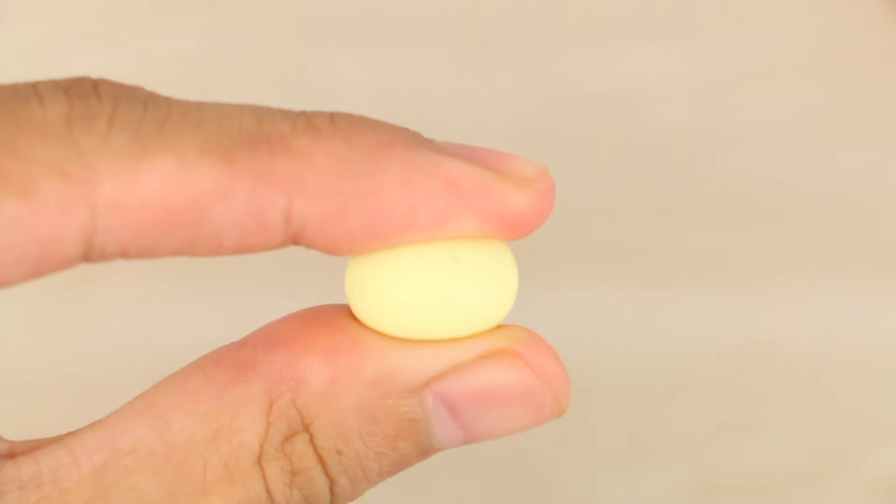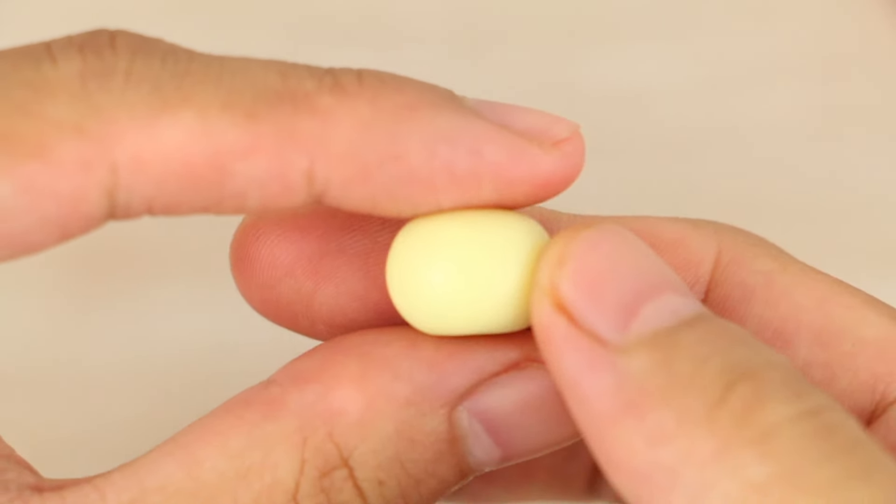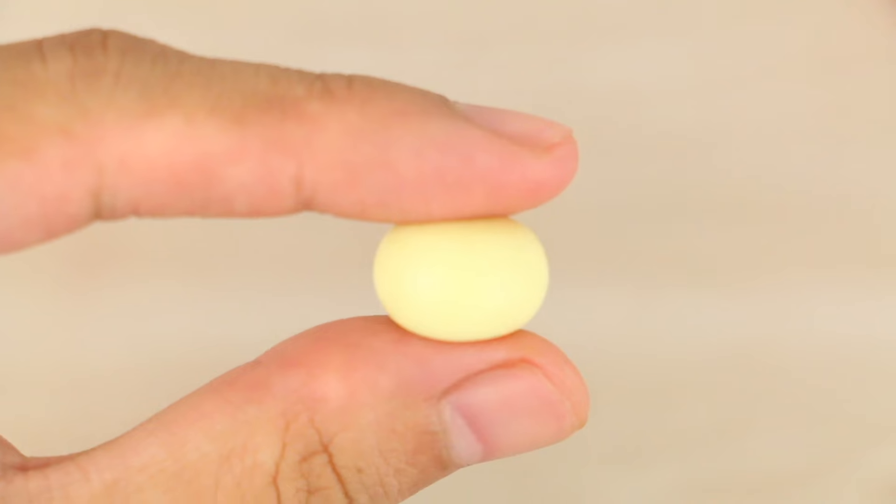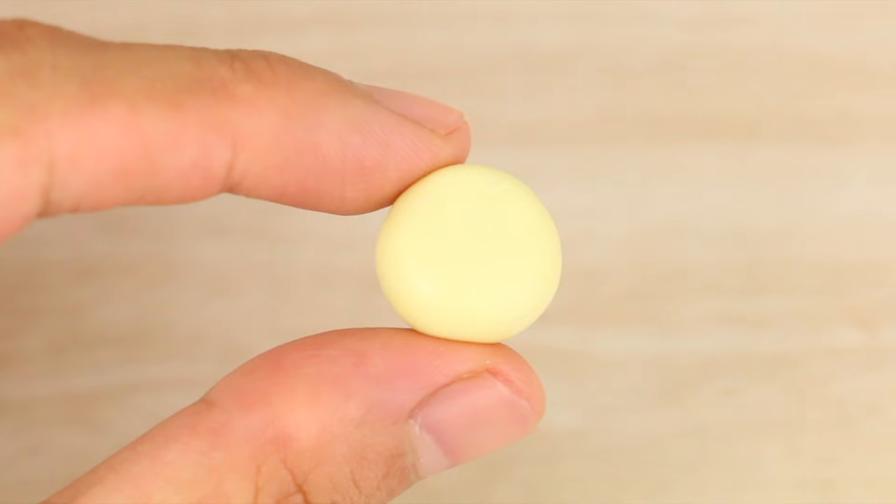Then I'm turning it so one of the flat sides is facing me and pinching the sides into five points.